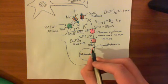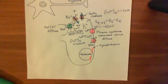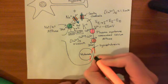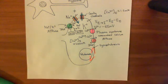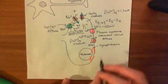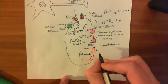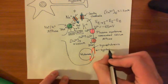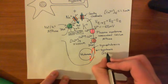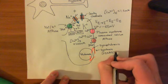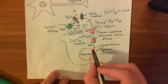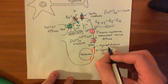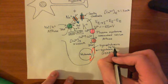Synaptobrevin consists of a single alpha helix. Another SNARE protein in the core complex is called syntaxin. Syntaxin is implanted into the plasma membrane rather than the synaptic vesicle membrane, so it is called a T-SNARE, standing for target SNARE. The alpha helix of synaptobrevin is going to interact with the alpha helix of syntaxin to form a complex.